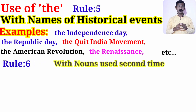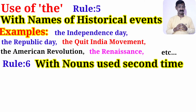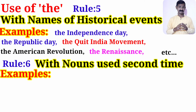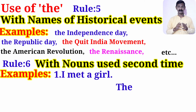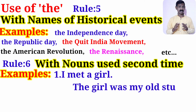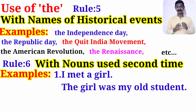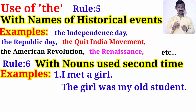We use article 'the' with nouns when they are used a second time in the sentence. For example: 'I met a girl' — in the first sentence we use 'a girl' because the noun 'girl' is used for the first time. In the second sentence we say 'the girl was my old student' because the noun has already been introduced.